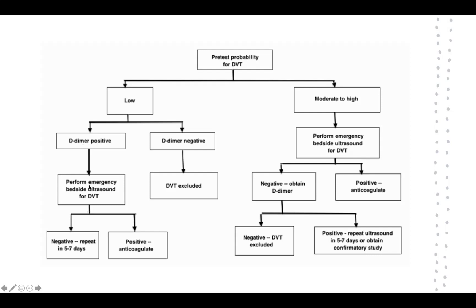We follow up a positive D-dimer with an ultrasound scan. If there is moderate to high risk probability, there is no reason to chase a D-dimer — we jump straight to ultrasound. Depending on the result, we can treat for DVT. A negative ultrasound can safely exclude it. However, if the ultrasound is negative but the D-dimer is positive, we may want to repeat the ultrasound or perform a different study.